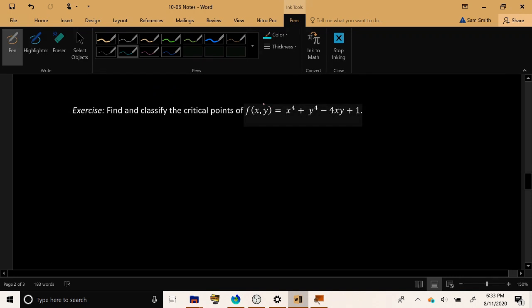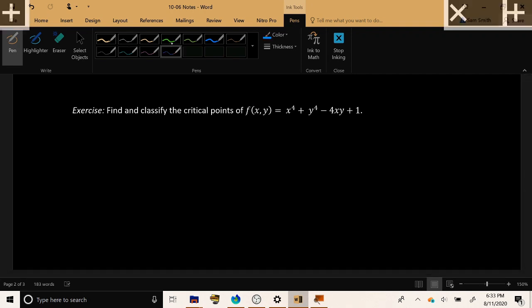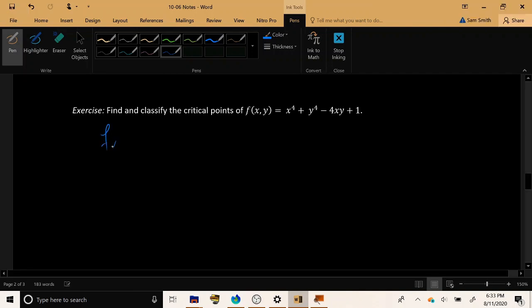Okay. Let's try it here. Find and classify the critical points of the function f(x, y) equals x to the fourth power times y to the fourth power minus 4xy plus 1. All right. So to find the critical points, we need to start by finding the first derivatives.